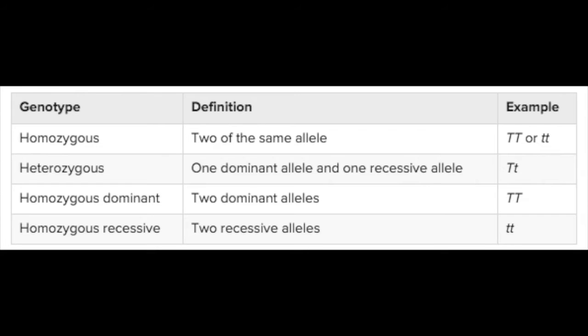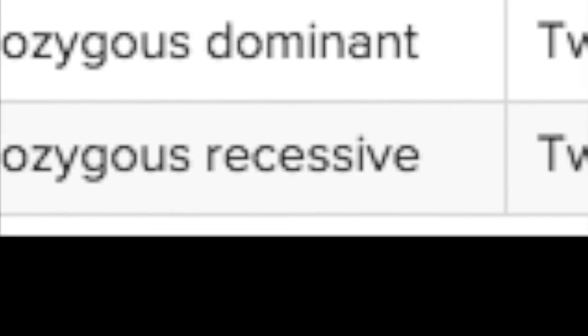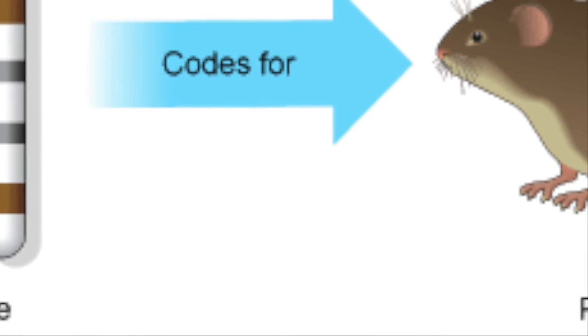Let's go over the different types of genotypes, their definitions, and examples. Homozygous means you have two of the same allele — either both capitals or both lowercase, like capital T capital T or lowercase t lowercase t. Heterozygous means you have one dominant and one recessive allele, so one capital and one lowercase. Homozygous dominant means you have two dominant alleles, like capital T capital T. Homozygous recessive means you have two recessive alleles, such as lowercase t lowercase t.